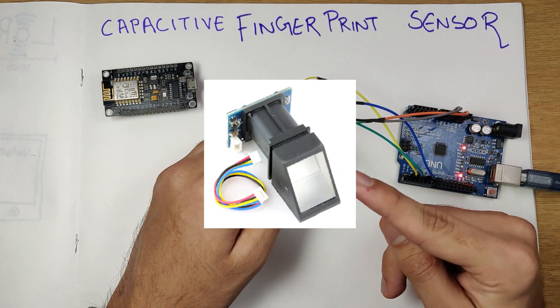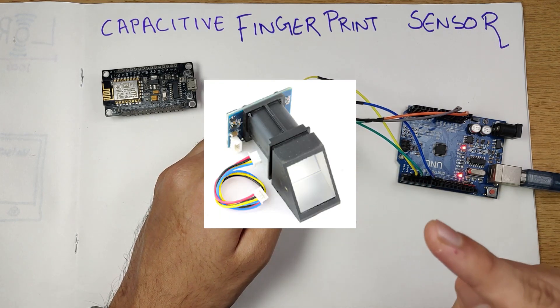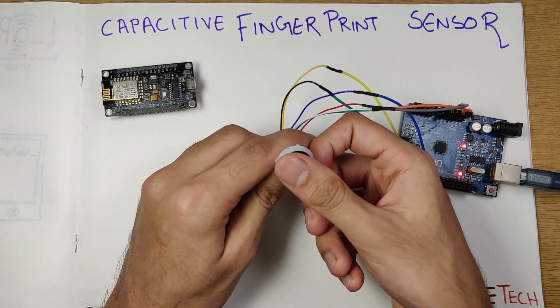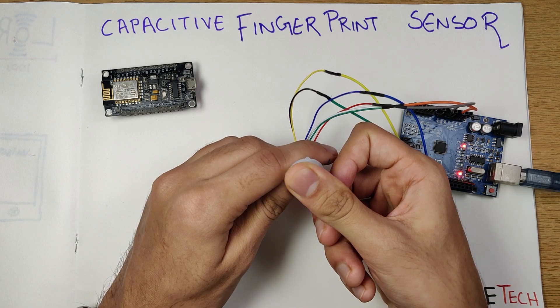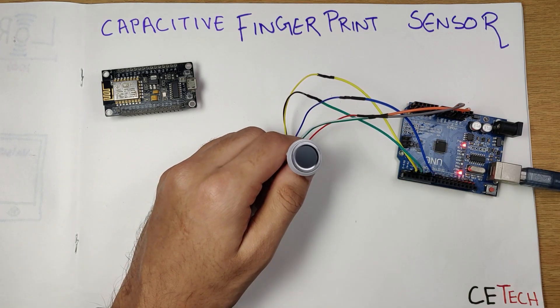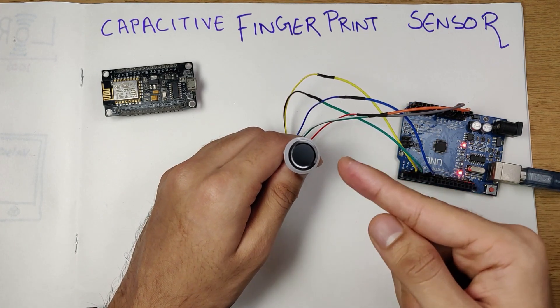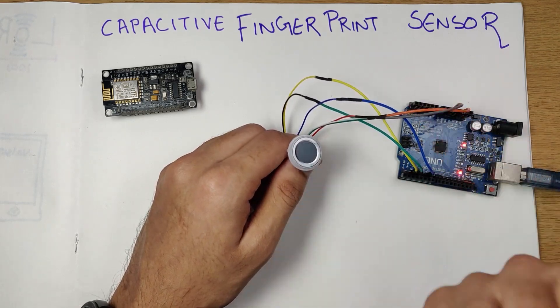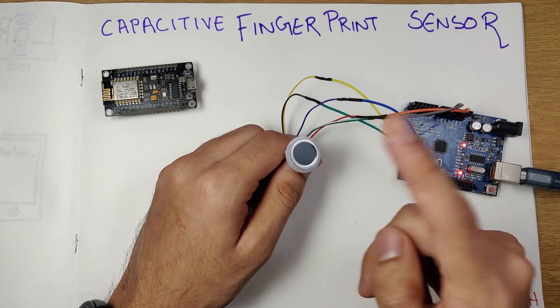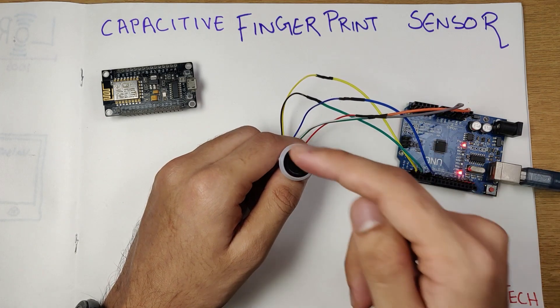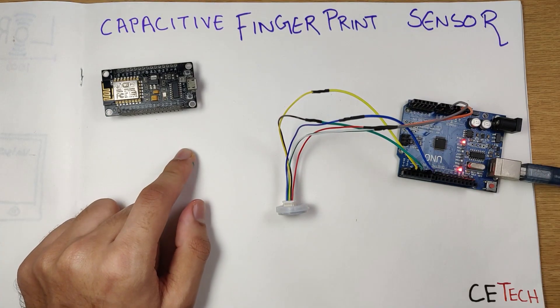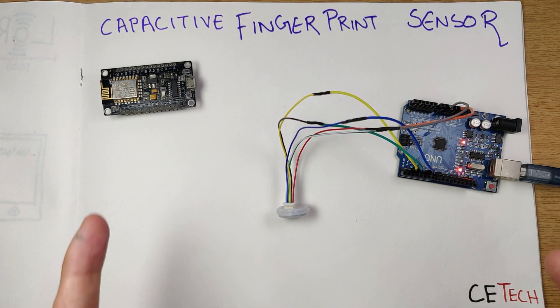Earlier in the market we used to have these kinds of optical sensors which were slow and not very accurate. They took multiple swipes to get into, but the capacitive fingerprint sensor that we have here today is pretty fast in reading and pretty accurate as well. That is why you see these kind of fingerprint sensors on the back side of your phones. So this is the same kind and we'll be taking a look at how we can interface it with the Arduino Uno today.